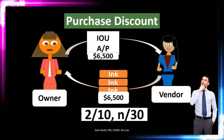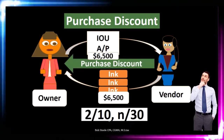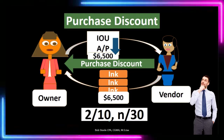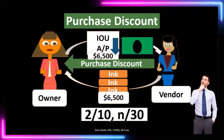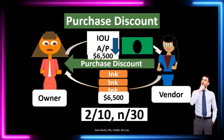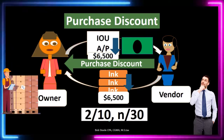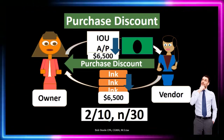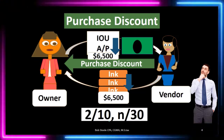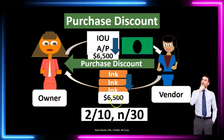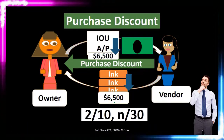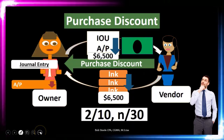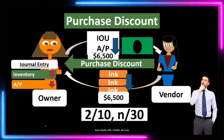If we make the payment within the discounted time period — within 10 days — we now have to account for the purchase discount. The vendor says we don't have to pay the full six thousand five hundred, reducing that IOU by the discounted amount. So we reduce the IOU and the amount of cash we pay to the vendor. Less intuitively, the inventory is also going to go down. We overstated inventory at six thousand five hundred — it didn't actually cost us that because we got a discount — so we need to reduce inventory.